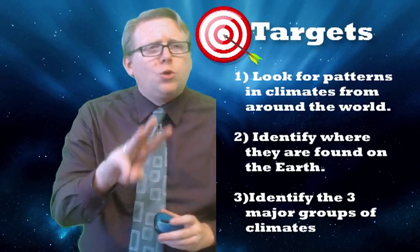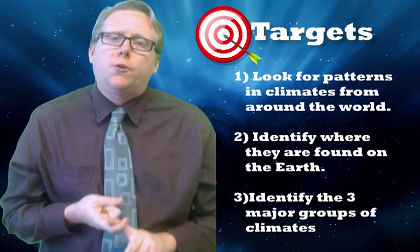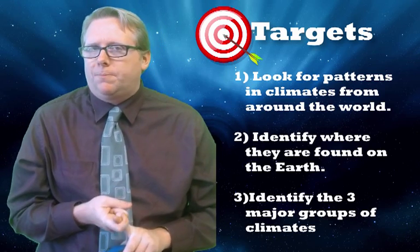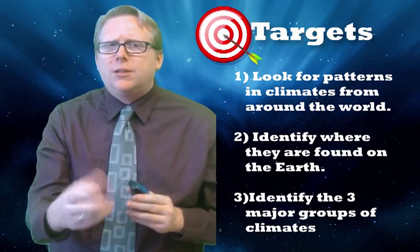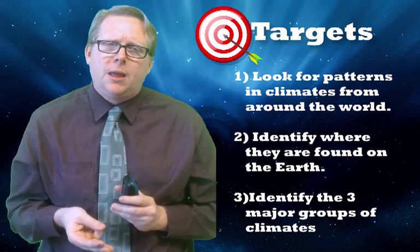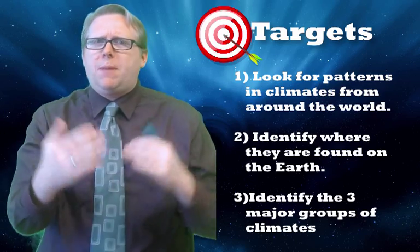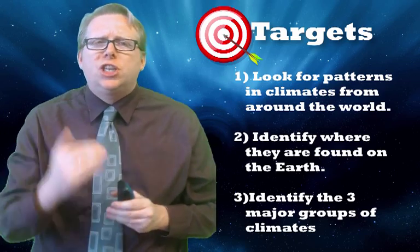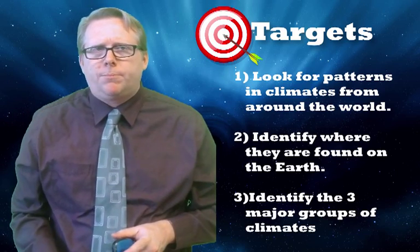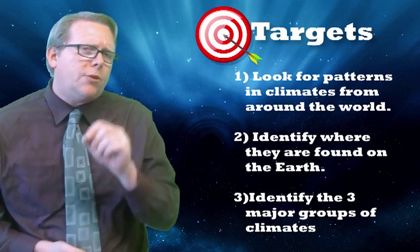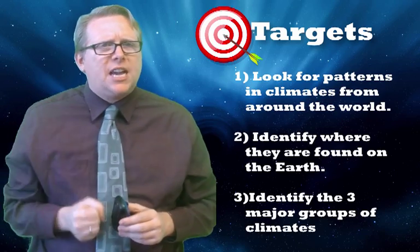In this video, we're going to do three things. The first thing is we're going to look for patterns in climate around the world. When we see that, we're going to group those patterns into three major categories, and then we're going to identify where they're found — so we can make predictions about climate just by where you are on the planet. Remember to write those in the Cornell note sheet, in the big ideas section.